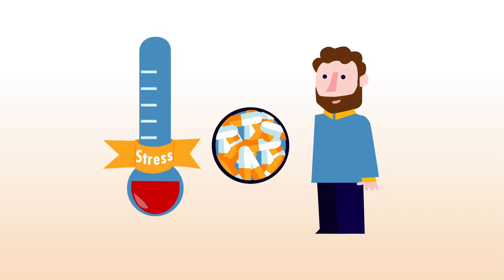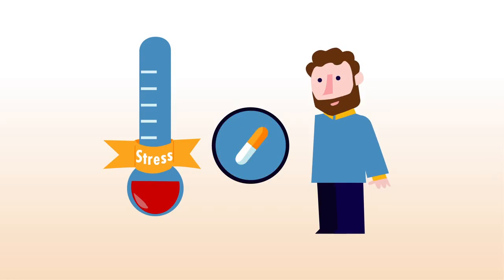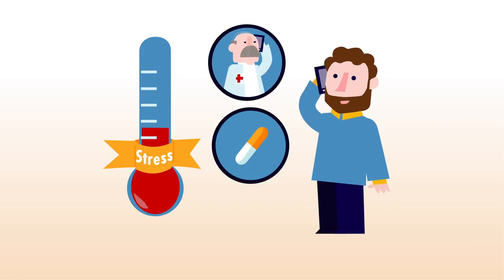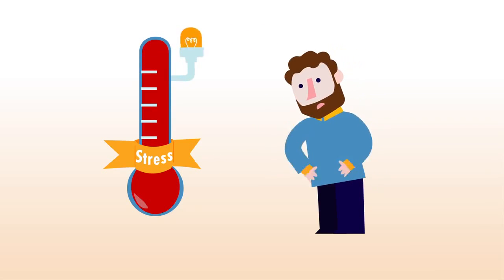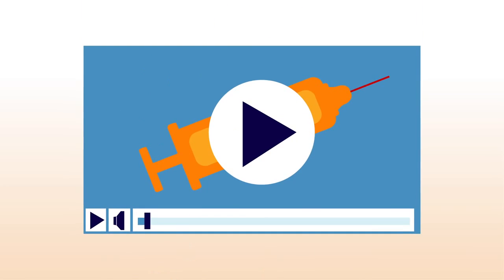Once you're feeling better, go back to your normal dosage. And if you have any doubts, call your doctor. If you can't prevent an Addison Crisis, you will need to have an emergency injection. Watch the emergency injection animation to see how.